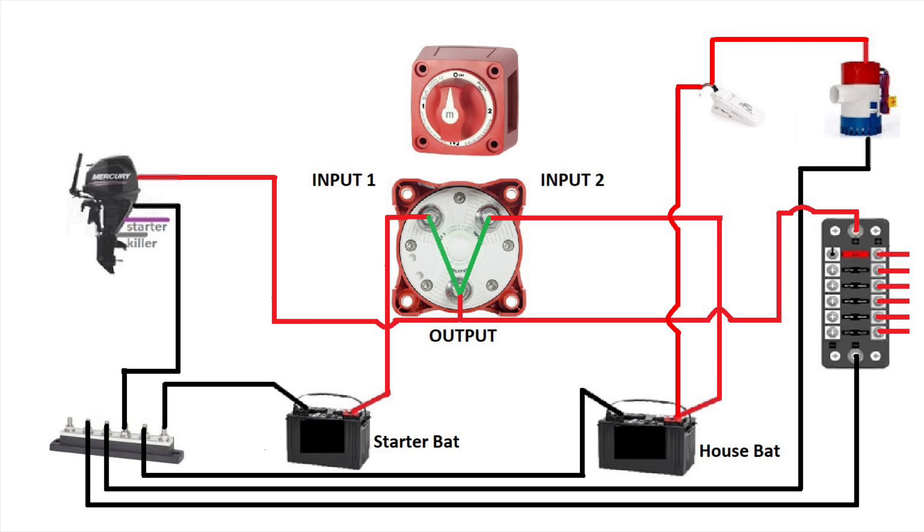Some switches have the option of selecting both inputs, and that's where both batteries, while your engine is running, will be recharging. It's not the best option, but if you need it, it's there. And then on the switch, we have the off position. That's where no batteries will be connected, so that's why the green lines have disappeared.